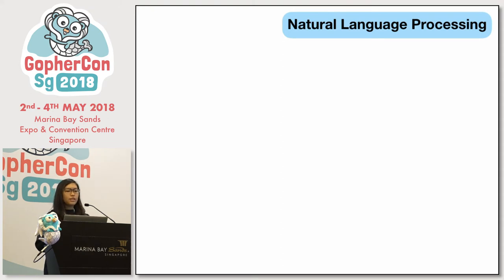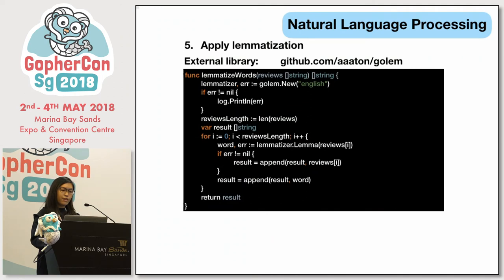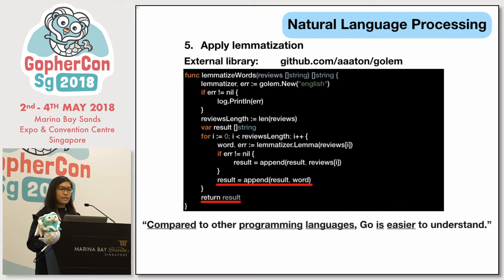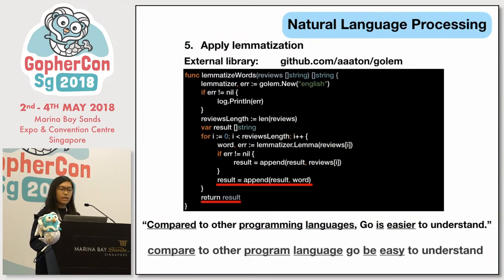For natural language processing, I applied lemmatization using a library called GoLem. As mentioned, lemmatization transforms words to their base form using a predefined dictionary. In the for loop, if a word cannot be lemmatized, it appends the word as-is into results; if it can be lemmatized, it appends the base word and returns the lemmatized result. For example, the sentence 'Compared to other programming languages, GoLem is easier to understand' gets processed — and we can notice changes to the words 'compared', 'programming', 'languages', 'ease', and 'easier'. They have been transformed to their base form.